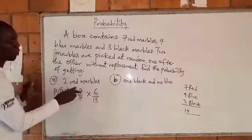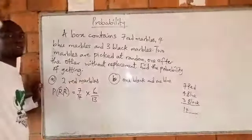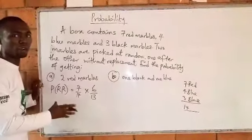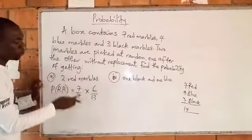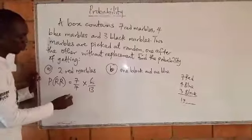Out of 7, we have picked one, it remains 6. If we have taken one out of 7, that affects the total number of marbles. Before we had 14, now we have 13.